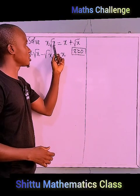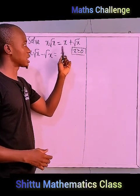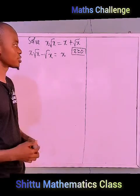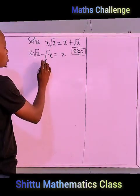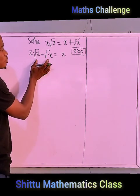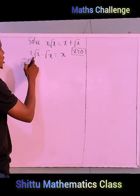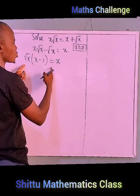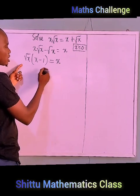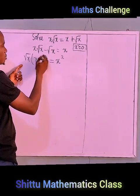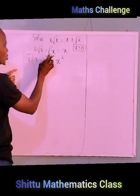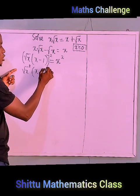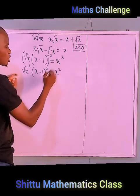We always have x greater than or equal to zero because when you have root x, the expression under the square root cannot be negative, if we are looking for real numbers. From here, we can factorize root x out, giving us root x times (x minus 1). Now I square both sides: (root x)² times (x minus 1)² equals x².